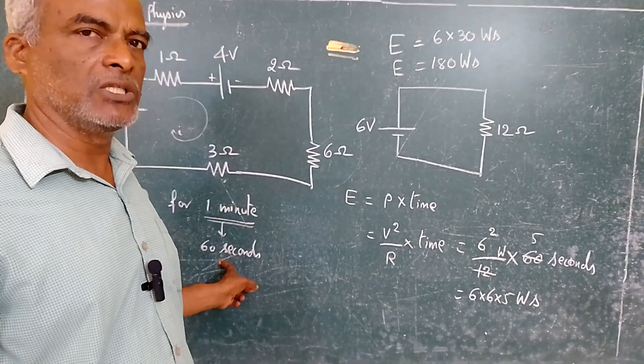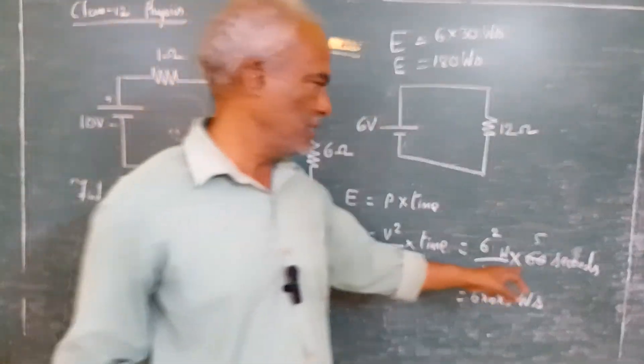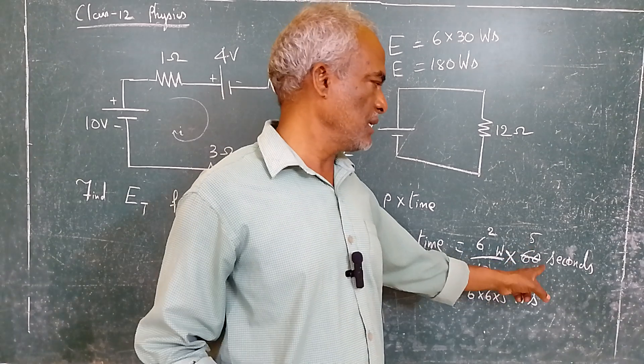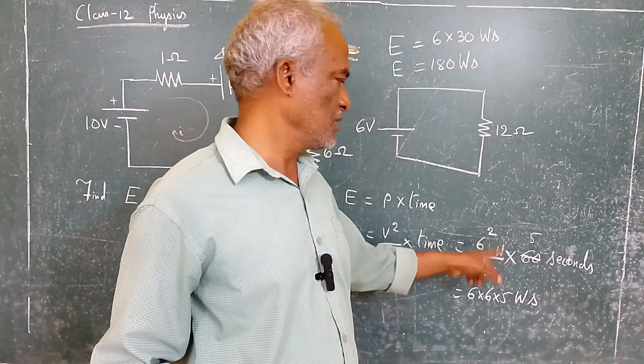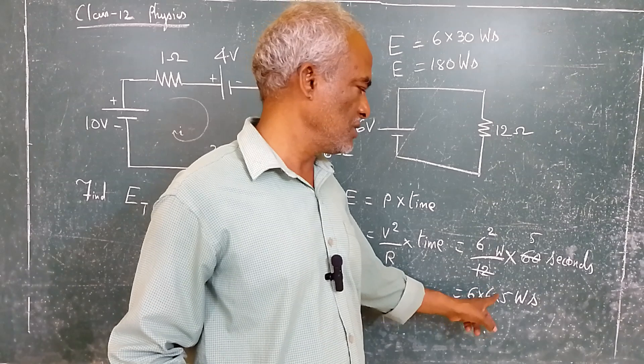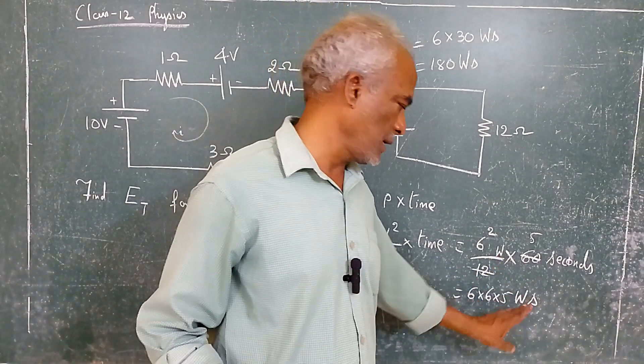So we have converted into seconds. So 12 fives are 60, so 6 square. This 6 square can be written as 6 into 6 into 5, unit is watt second.